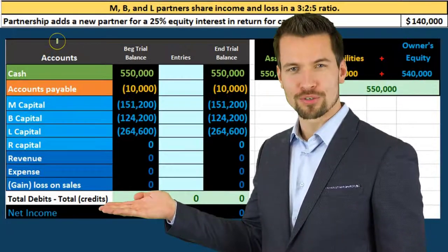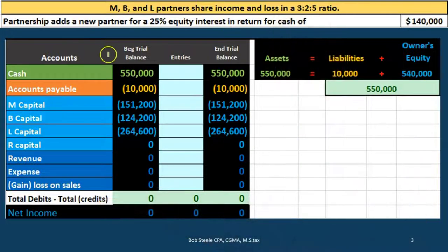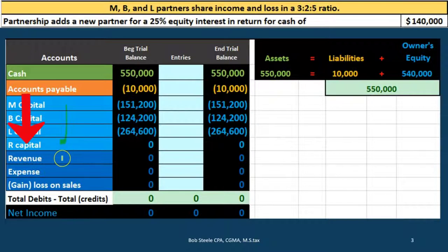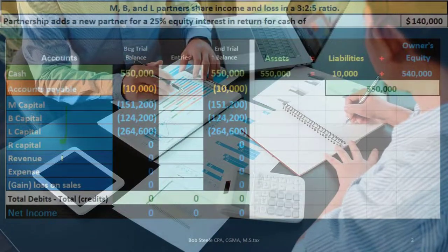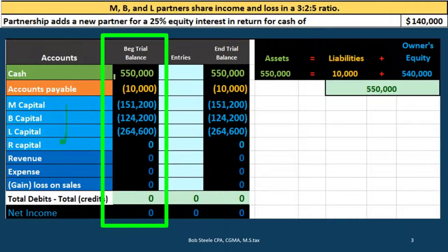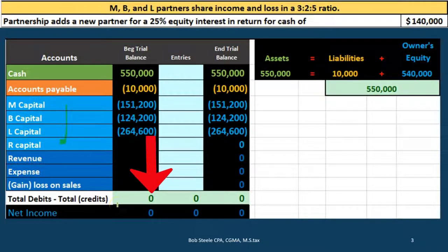We're going to work through a problem using a simplified trial balance with a beginning balance and an ending balance. The only asset is cash, and accounts payable is the only liability. We'll focus on the capital accounts as we add a new partner. Note that debits are represented by non-bracketed (positive) numbers and credits by bracketed (negative) numbers, so debits minus credits equals zero.